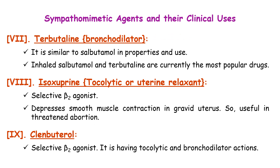Terbutaline is also a bronchodilator. Isoxsuprine is a tocolytic or uterine relaxant drug, mainly used to depress smooth muscle contraction in the gravid or pregnant uterus, useful in cases of threatened abortion. Isoxsuprine is a selective beta-2 agonist. Clenbuterol is also a selective beta-2 agonist, having both tocolytic and bronchodilator actions.